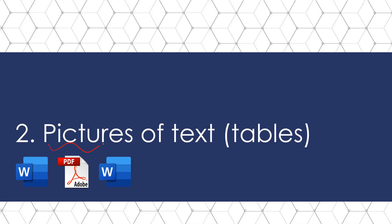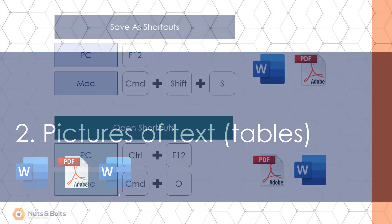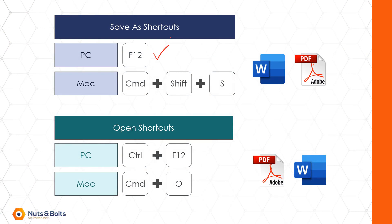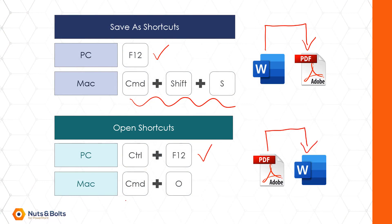Next let's look at how to use this trick to convert pictures of text or pictures of tables back into text by converting Word into PDF and PDF back into Word. A couple of shortcuts I'll call out: I'm using F12 to save Word as a PDF (Command+Shift+S on a Mac), and Control+F12 to open a PDF back into Word (Command+O on a Mac). You simply need to open the PDF back inside of Word.